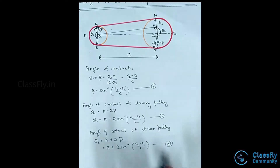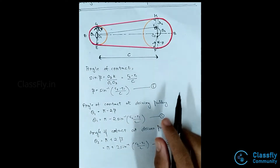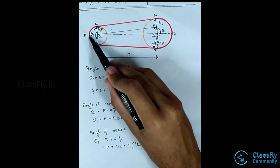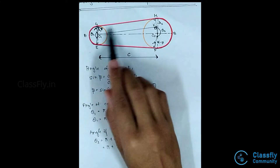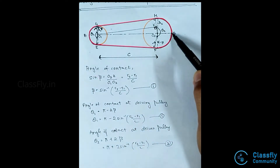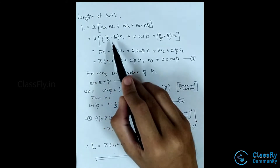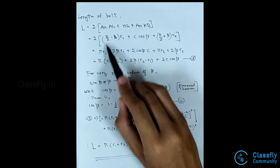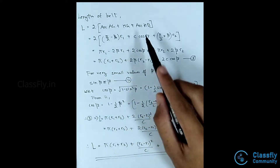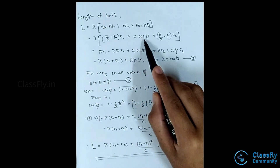Now consider the length of the belt. The length L can be given as 2 times (arc AG + GH + arc HB). Substituting the values: arc AG = (pi/2 - beta) times r1, and GH = C cos beta.